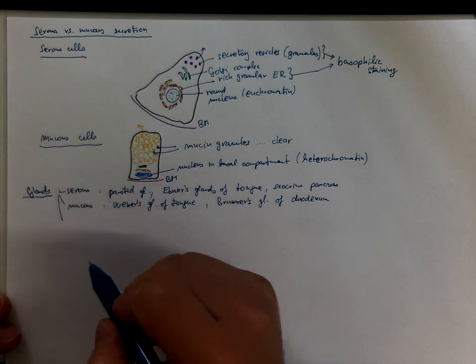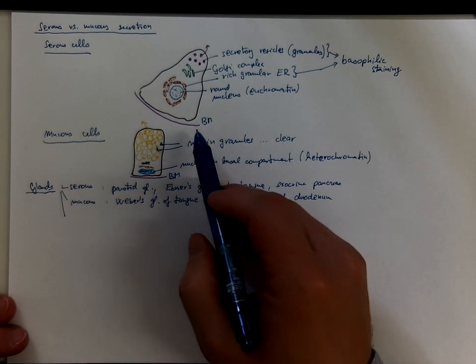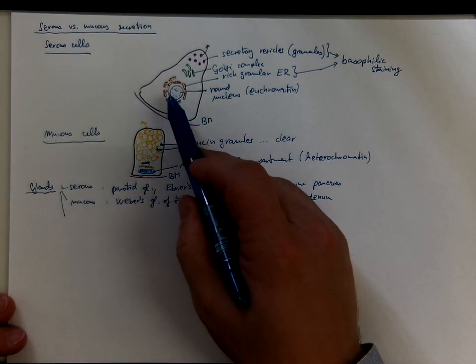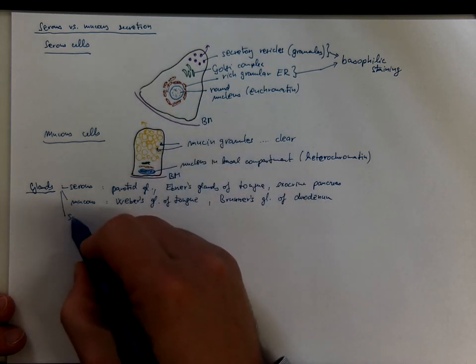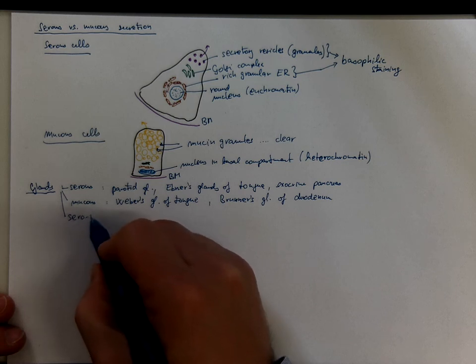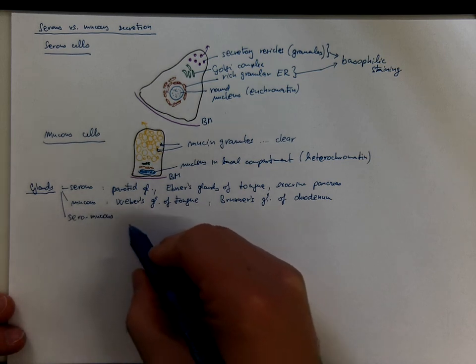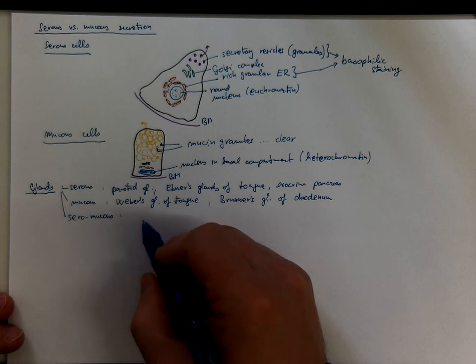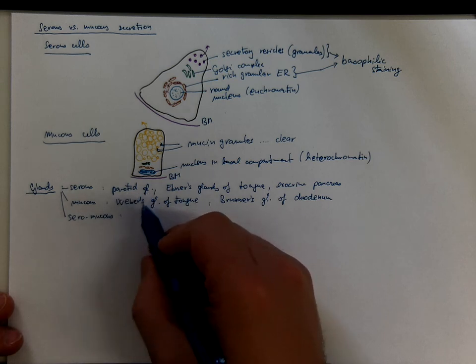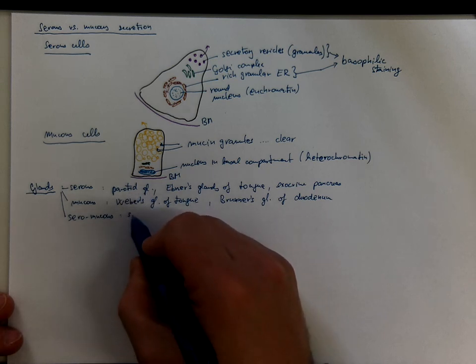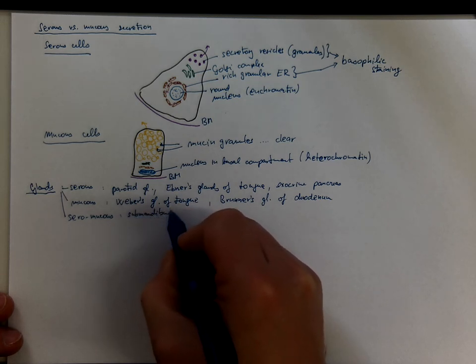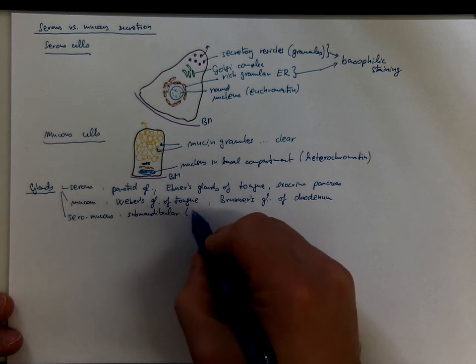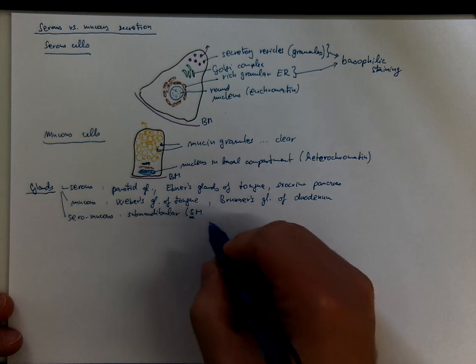And there are glands where you can find secretory portions made of serous cells and secretory portions made of mucous cells. You call it mixed or seromucous glands, such as the other two major salivary glands. I mean the submandibular gland, which is seromucous, but slightly more serous than mucous.